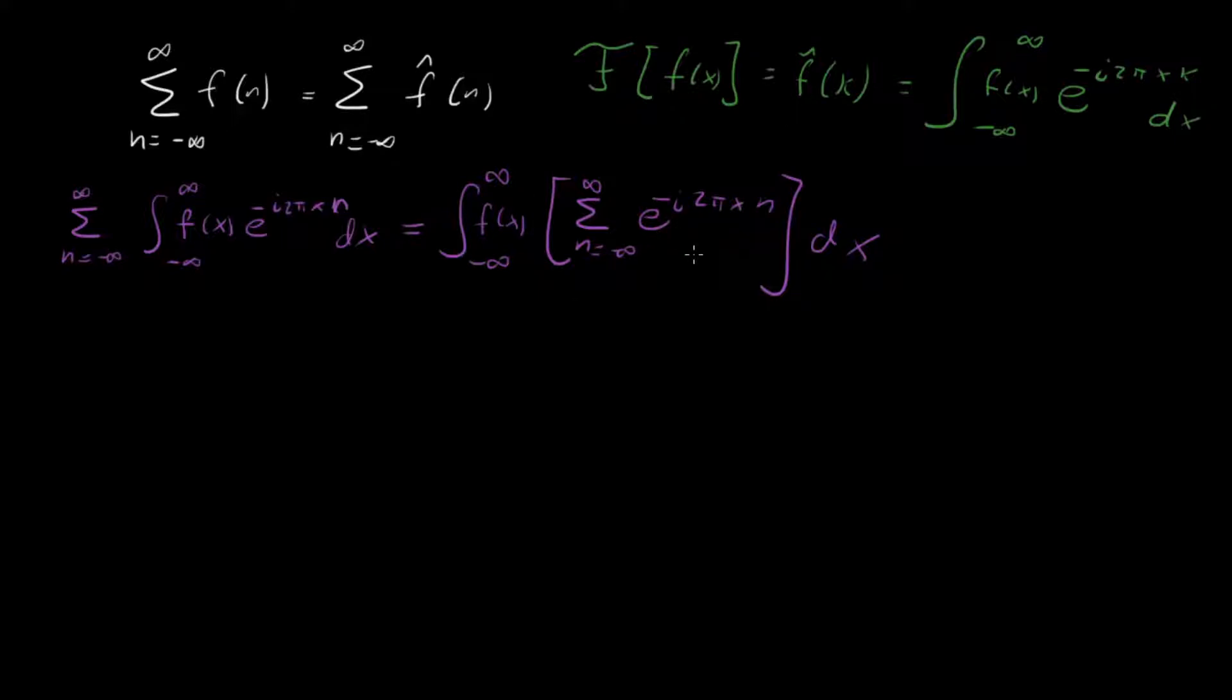And I'll just remind you that in that video, we were able to show that this sum n equal minus infinity to infinity e to the i n x is equal to 2 pi sum k equal minus infinity to infinity delta of x minus 2 pi k.